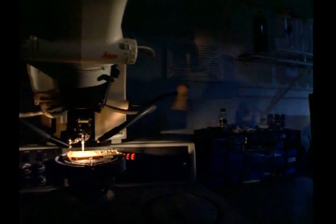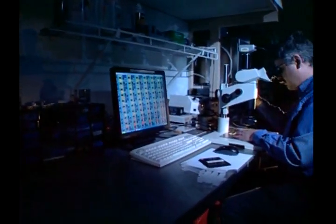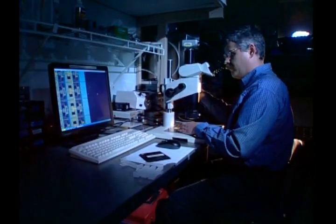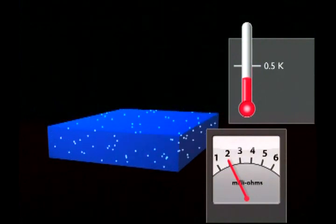To do so, the scientists are taking advantage of an unusual effect of electricity. The NIST sensors operate in the state between normal electrical conductivity and superconductivity, or the flow of electric current without resistance.